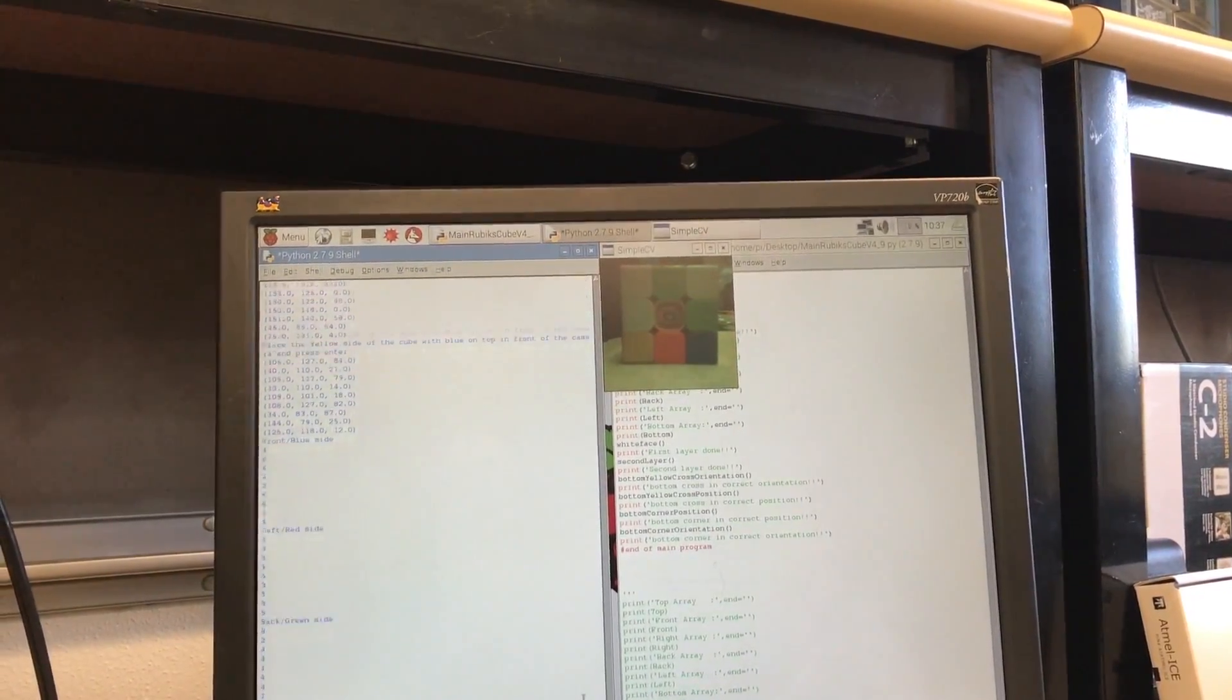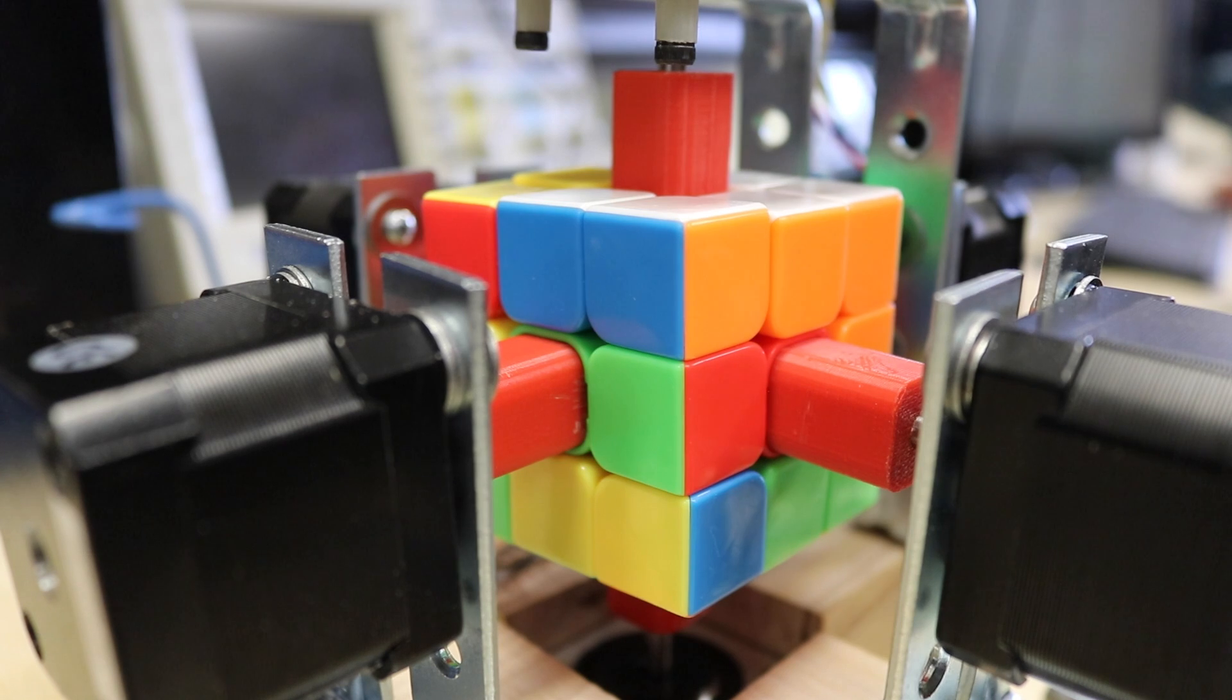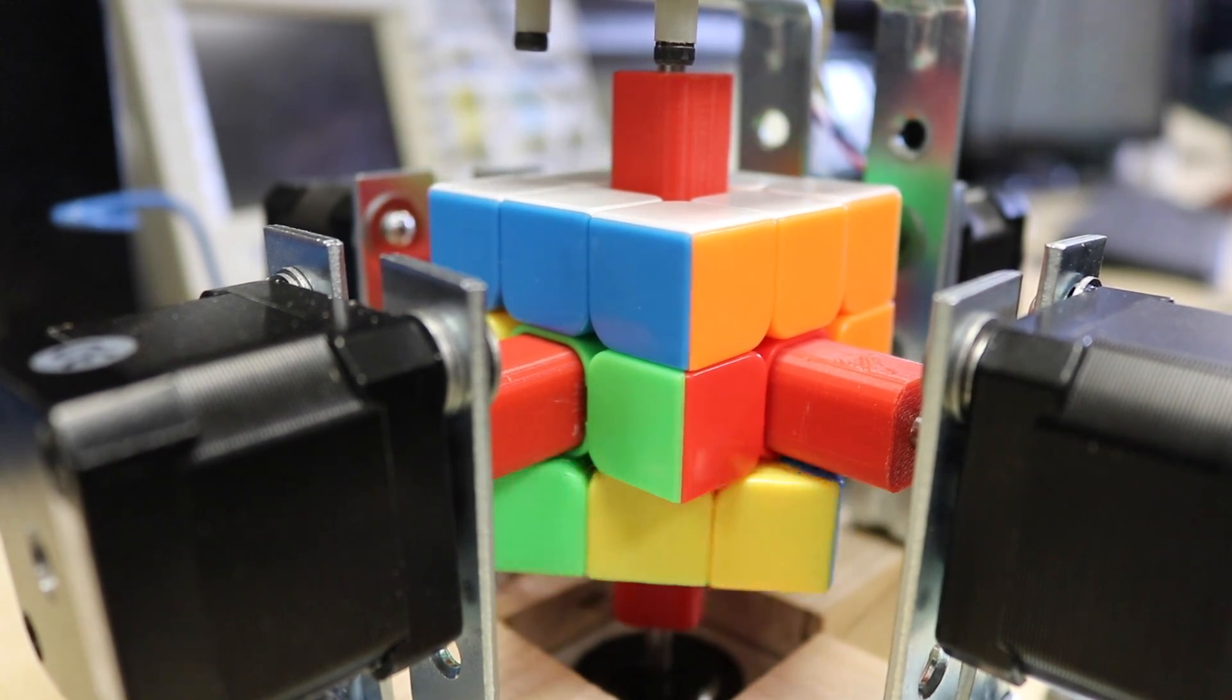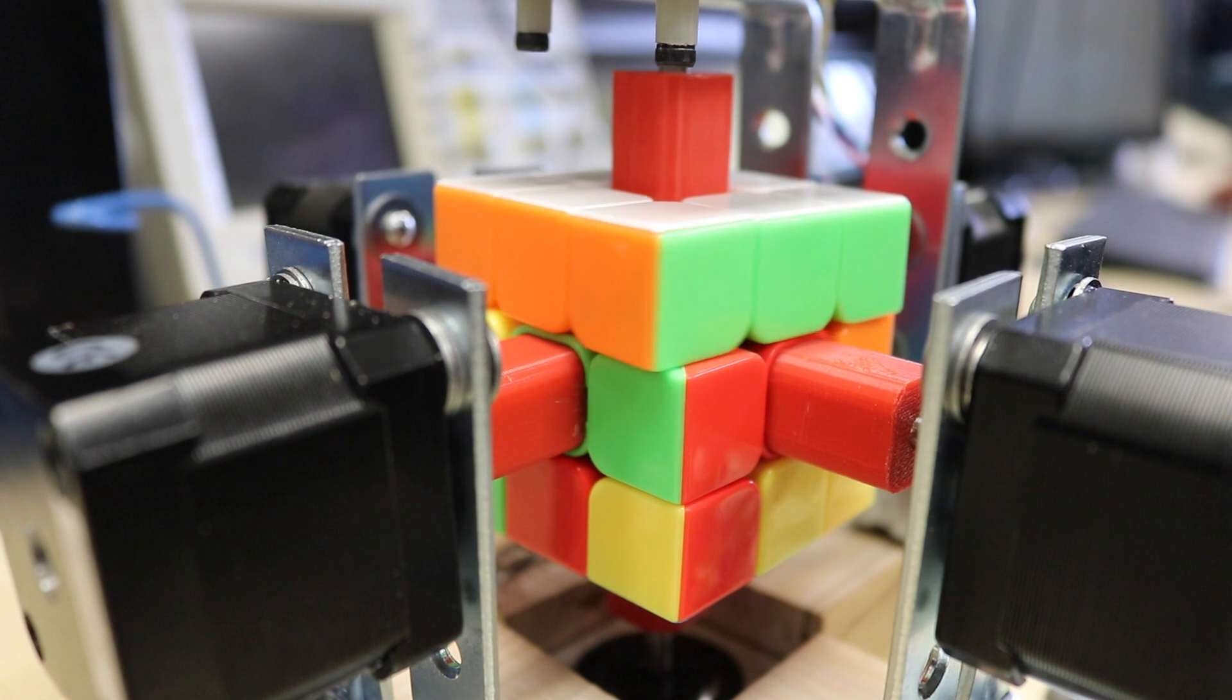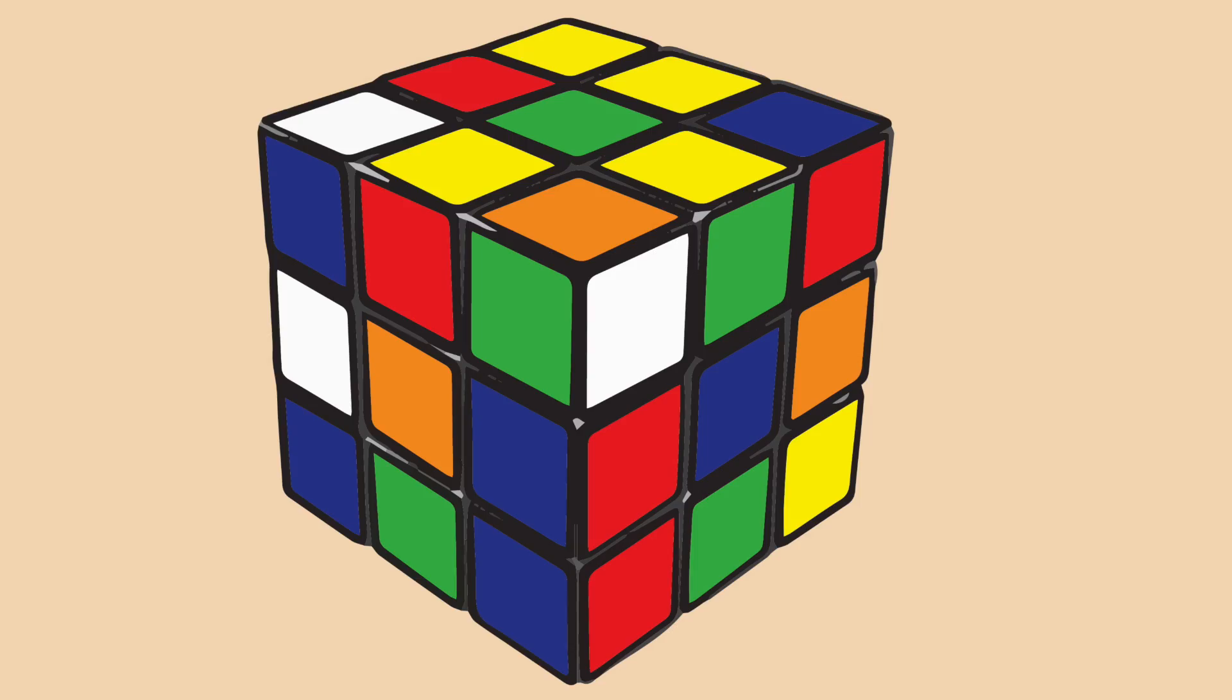Our own algorithm solves a cube in a way similar to how a beginner would. It solves the top layer first and works its way through the rest of the cube sequentially. It's important to note that each piece is unique because of the parts that it's connected to. For example, this white piece is different from this one. The algorithm recognizes the differences and knows how to move it accordingly.